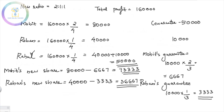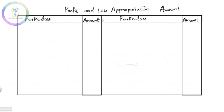Now we will prepare the profit and loss appropriation account showing these final profit shares: Mohith 73,333, Rohan 36,667, and Rahul 50,000.